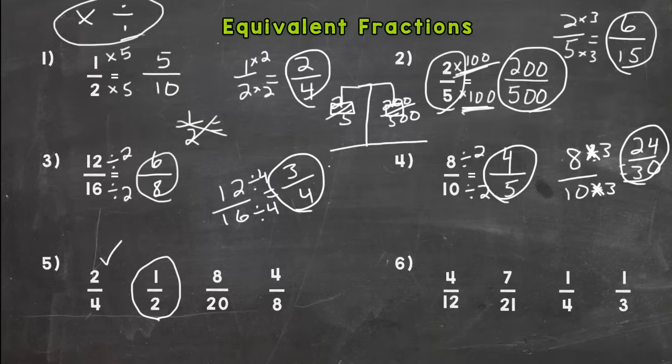So two out of four is a half, right? I can multiply the top and the bottom by two to get two fourths. Four out of eight is a half. I can multiply the one by four and the two by four. Eight out of 20 is the one that does not fit. That is not equivalent to one half. So that would be your answer. Eight twentieths is the one that doesn't fit.